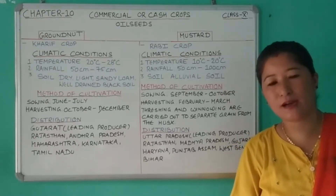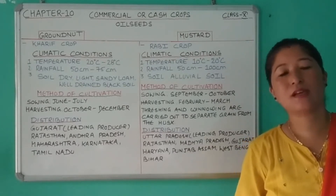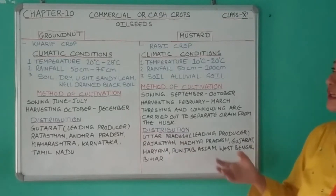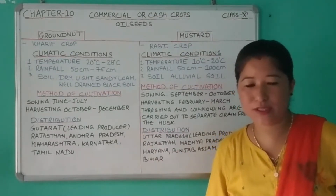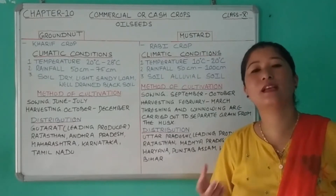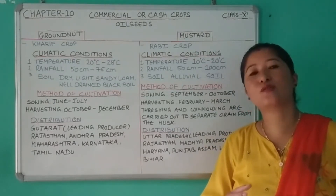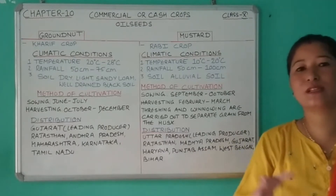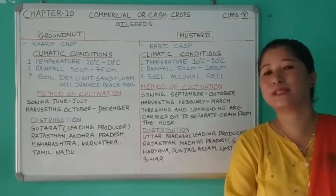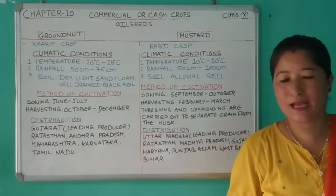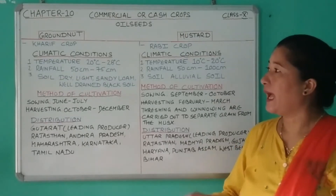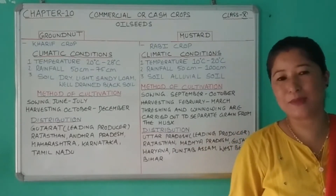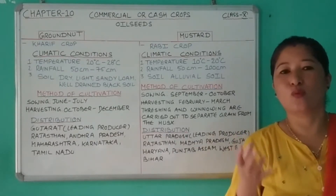Most of the oil seeds are in great demand in western countries. First, let's see groundnut. India is a leading producer of groundnut in the world. It is a leguminous crop and is also grown as a rotation crop, which means it helps in fixing nitrogen in the soil, thereby retaining the fertility of the soil naturally.